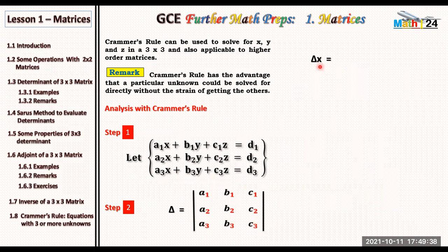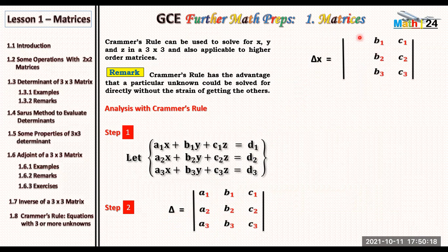This determinant is delta x. When you obtain these determinants — that is the second step — we also look for the determinant of x, the determinant of y, and the determinant of z. For the determinant of x, we take this same determinant and replace the first column by the matrix on the right hand side — by d1, d2, and d3.